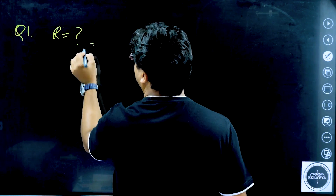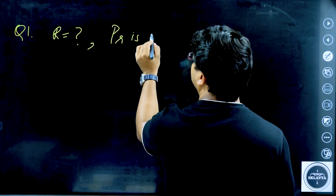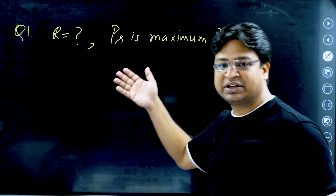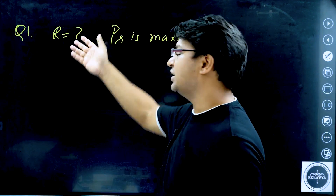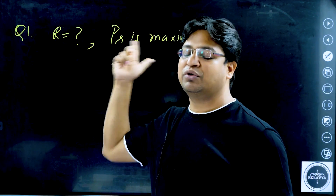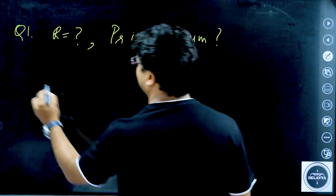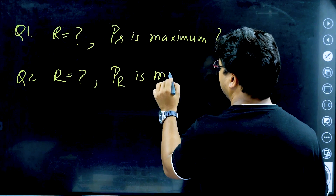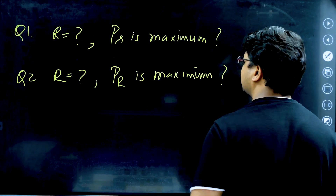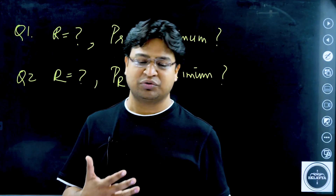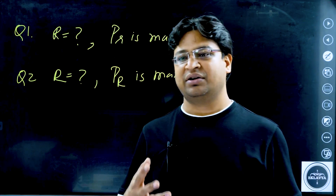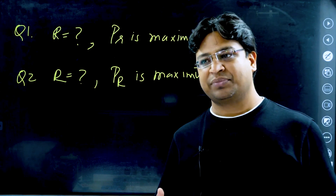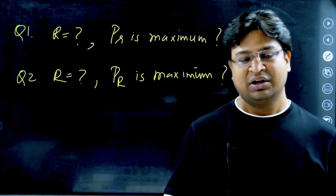So my first question is: for what value of R is P_r maximum? And my second question is: for what value of R is P_R maximum? If you already knew the answer but are now confused about which answer applies to which question, keep watching.